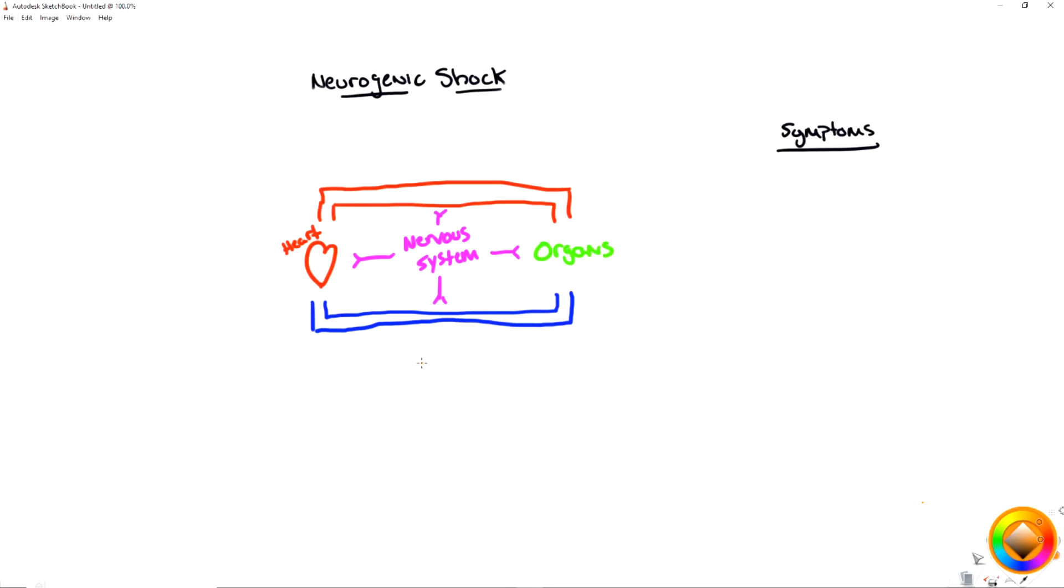All right guys, let's take a look at this neurogenic shock diagram. Remember that we're dealing with an injury to the autonomic nervous system. I'm going to use NS for nervous system during this. And more specifically, we're looking at the sympathetic nervous system.